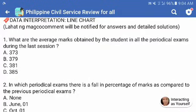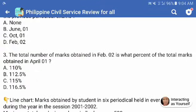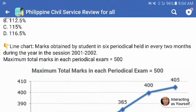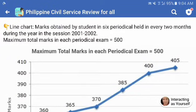Now let's do a data interpretation and this is the data line chart. These are marks obtained by students in six periodical exams held every two months during the year in the session 2001 and 2002. Maximum total marks in each periodical exam is 500.